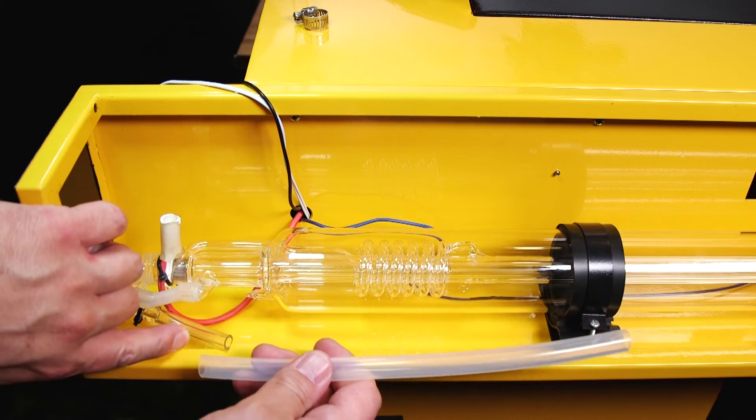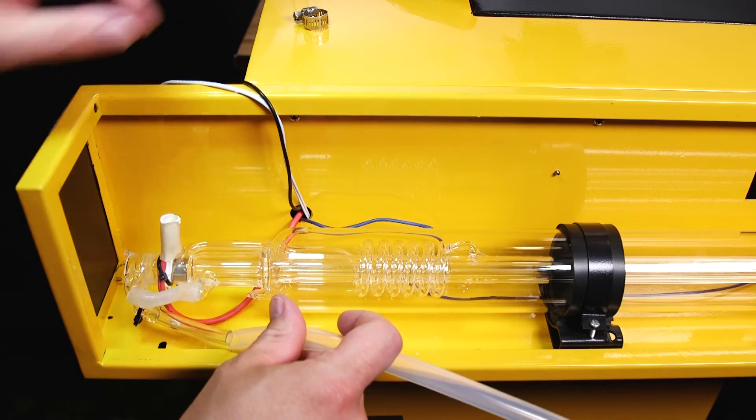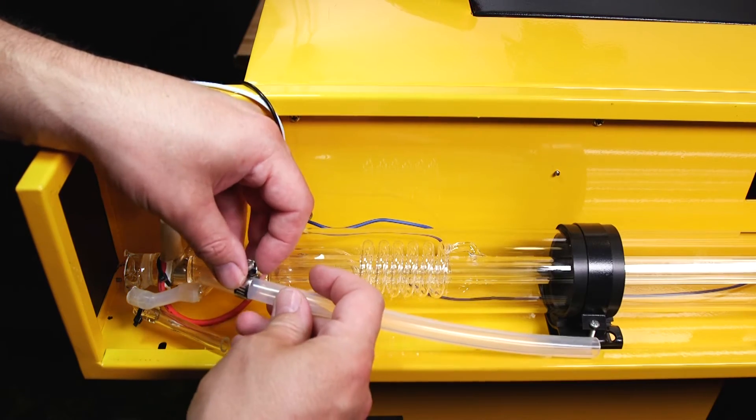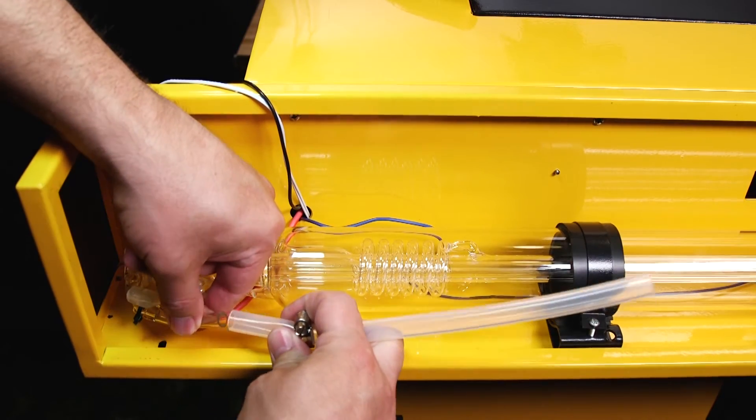Now I'm going to slip my three-eighths inner diameter silicone tubing on top of my three-eighths outer diameter vinyl tubing. I'm then going to secure the silicone tubing to the vinyl tubing with a hose clamp.